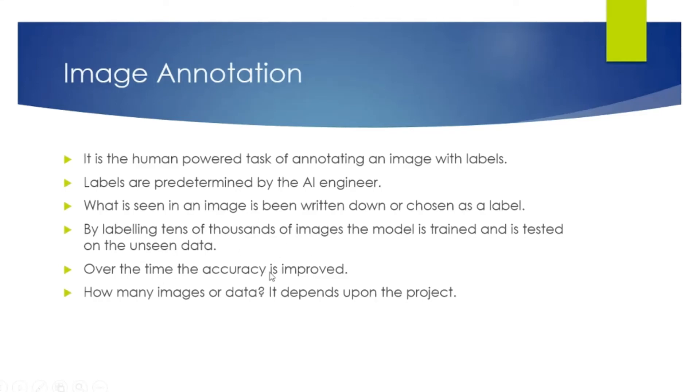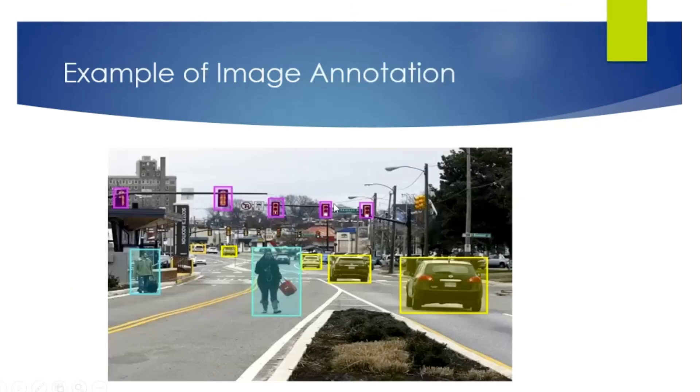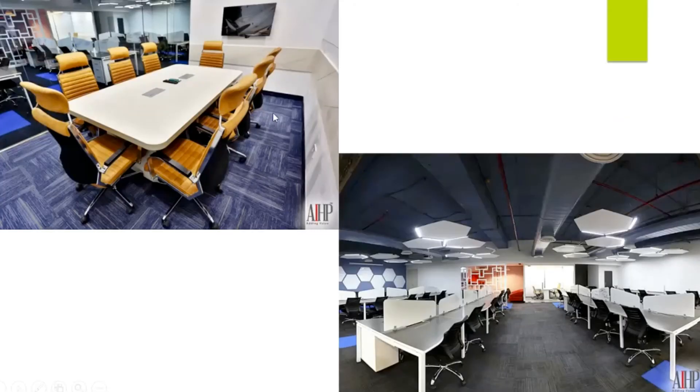Over time, the accuracy is improved of the model because we keep on training more and more data. This was all about image annotation and this example helps you understand what image annotation is.